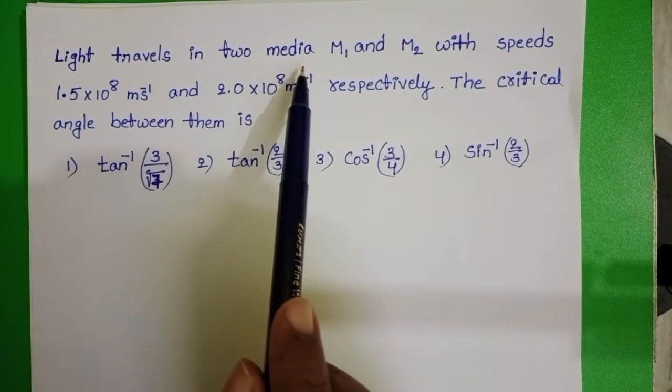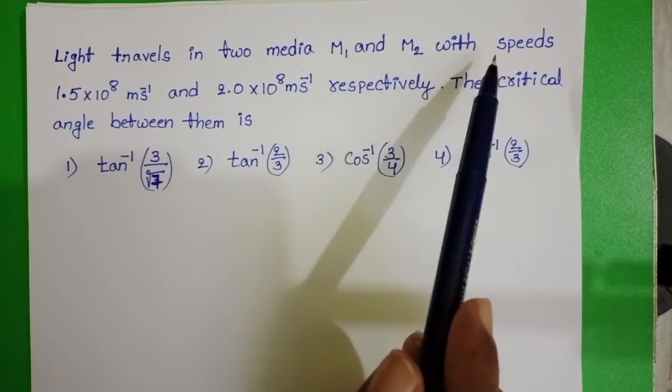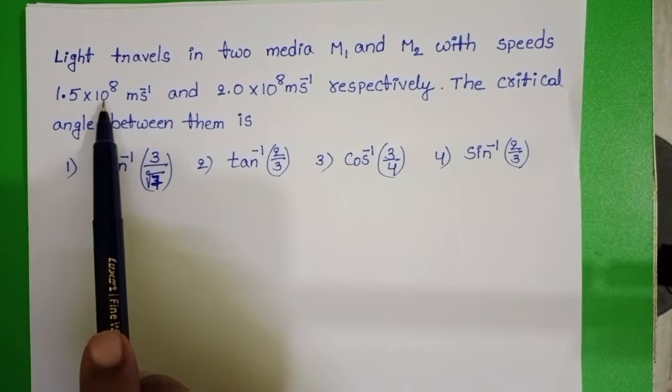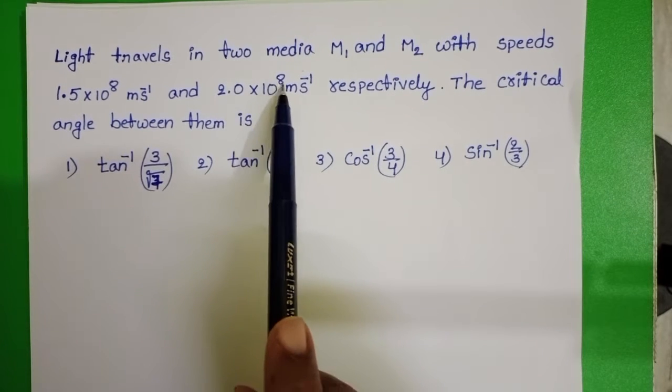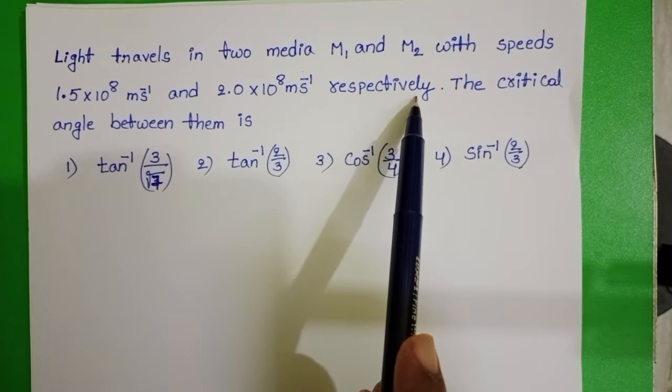Light travels in two media M1 and M2 with speeds 1.5 into 10 power 8 meter per second and 2 into 10 power 8 meter per second respectively.